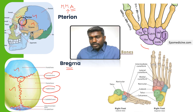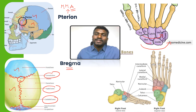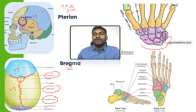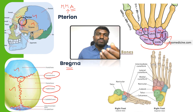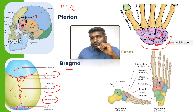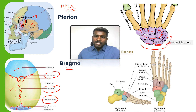Let's revise the carpal bones with the mnemonic 'She Looks Too Pretty, Try To Catch Her': S for scaphoid, L for lunate, T for triquetral, P for pisiform, then trapezium, trapezoid, capitate, and hamate. Remember, scaphoid is the most commonly fractured carpal bone and lunate is the most commonly dislocated carpal bone.